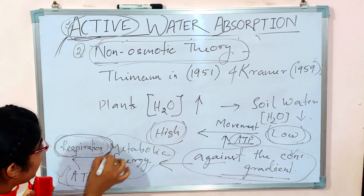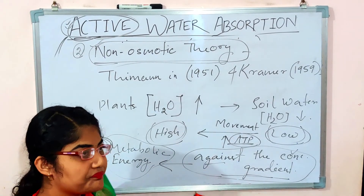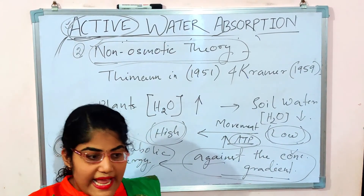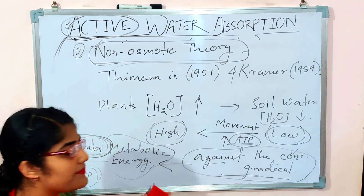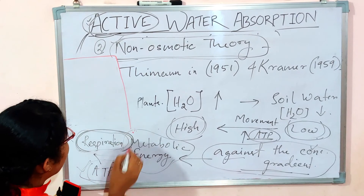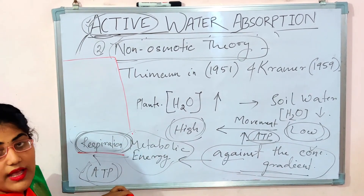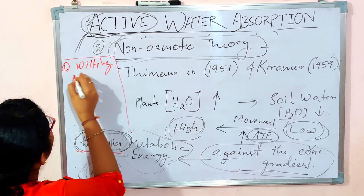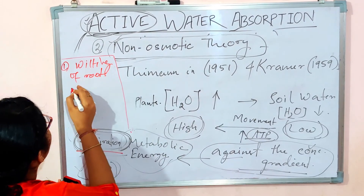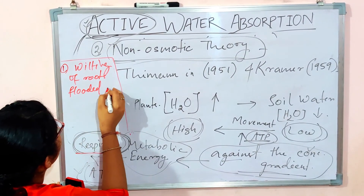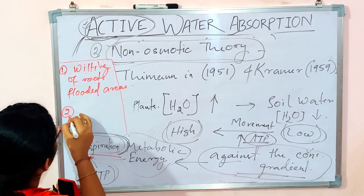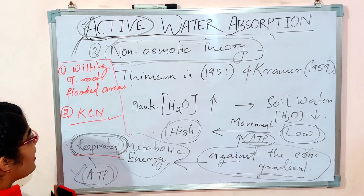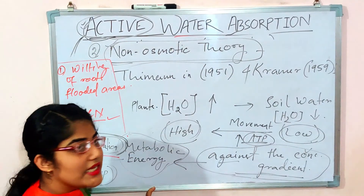Since this process is related to respiration, any factor that influences respiration also affects water absorption. Two main examples illustrate the link between respiration and water absorption: first, wilting of roots in flooded areas; and second, KCN, which is an inhibitor of the respiration process, also reduces the water absorption capacity.